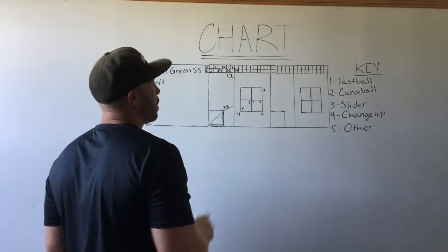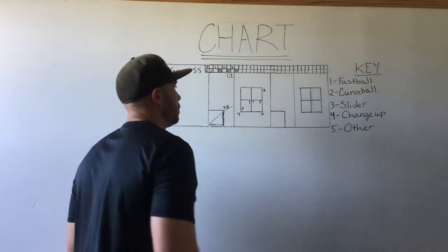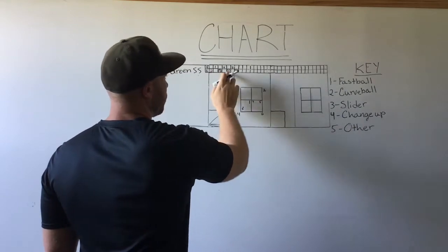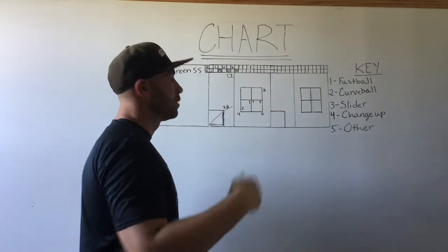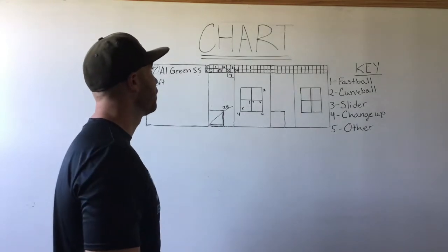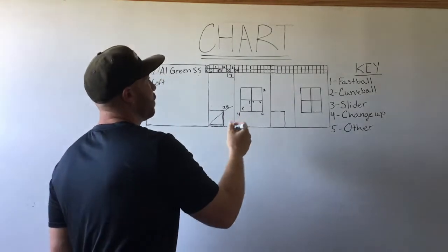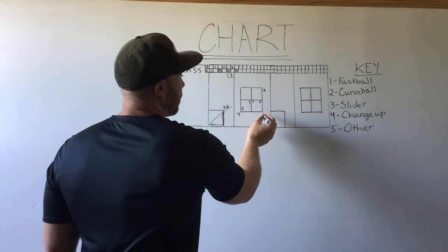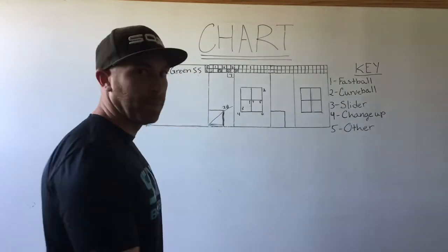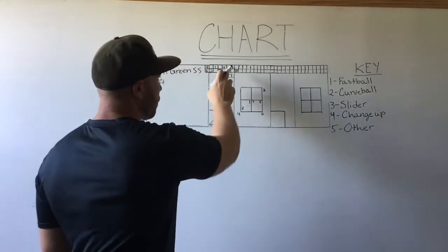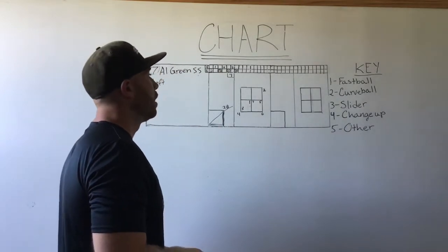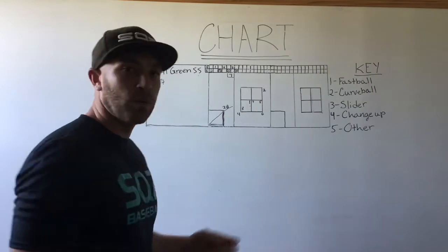The next pitch is a fastball that he pulls back for strike two again because he fouled it off. Then we come back with a slider down and in, which we miss for ball three. And now you have to throw him a fastball down the middle so we don't walk him.